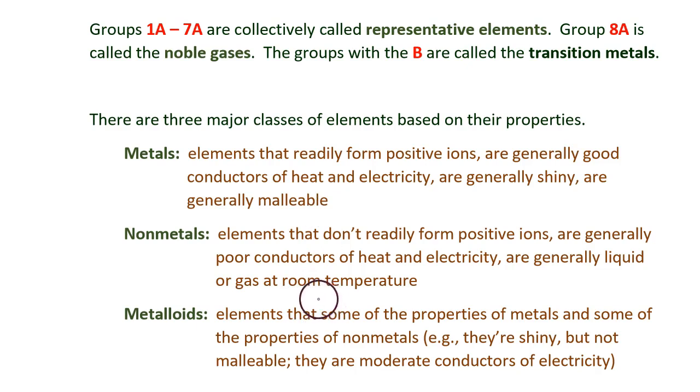Metalloids are elements that have some of the properties of metals and some of the properties of non-metals. For example, maybe they are shiny but not malleable, or maybe they are moderate conductors of electricity.